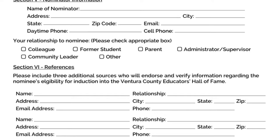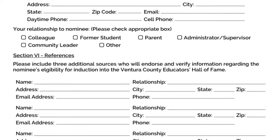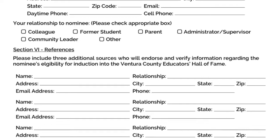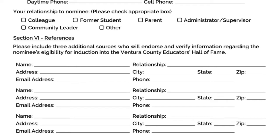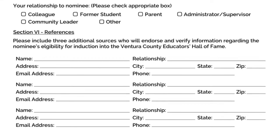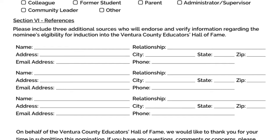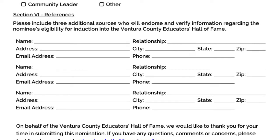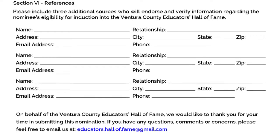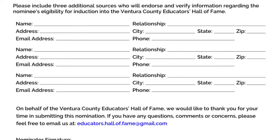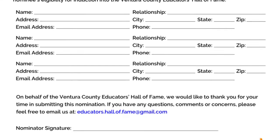Section 5: Nominator Information. The person nominating is not able to be anonymous — we need your complete contact information provided here. Section 6: References and Nominator Signature. Please note that by signing this, you are telling us that everything we asked for in the nomination is here and in the manner described on the form and in this video. Nominators, you will be informed when your nomination has been received.